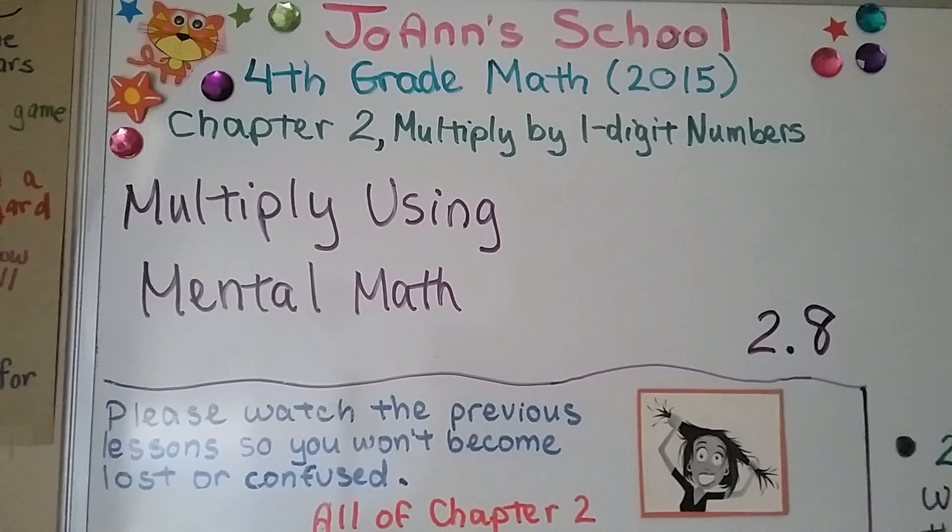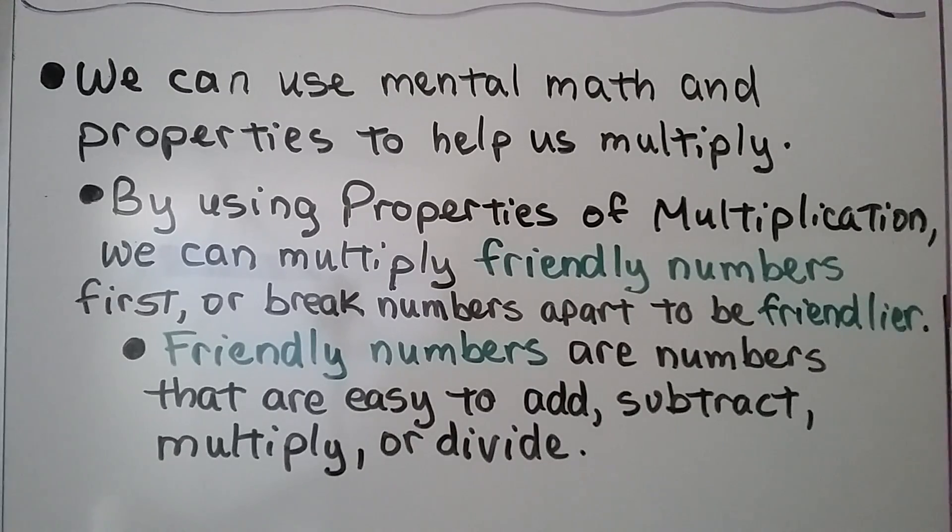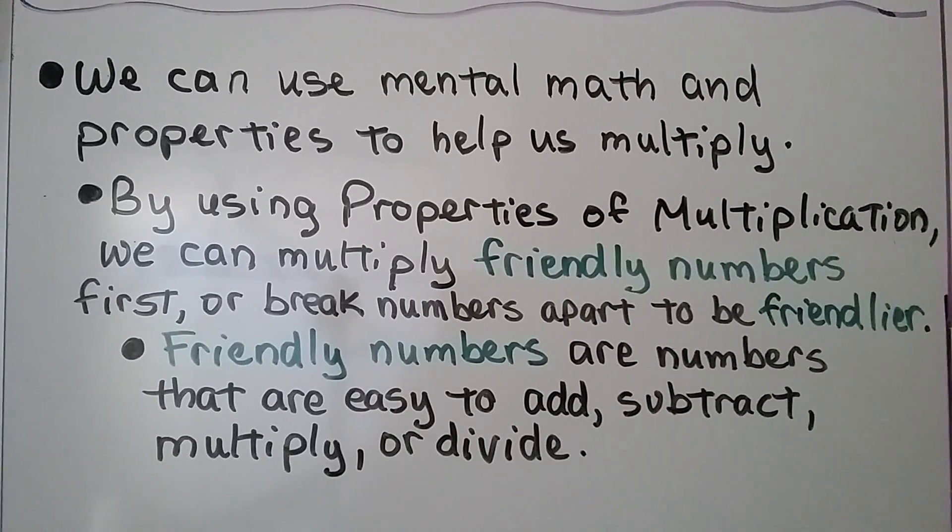Lesson 2.8, multiply using mental math. I hope you were able to see the previous videos for this chapter. It'll make it easier to understand this lesson. We can use mental math and properties to help us multiply. By using properties of multiplication, we can multiply friendly numbers first or break apart numbers to be friendlier. Friendly numbers are numbers that are easy to add, subtract, multiply, or divide.